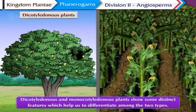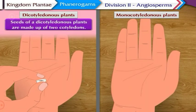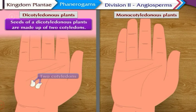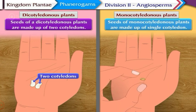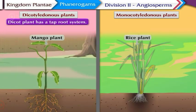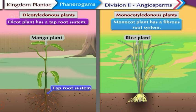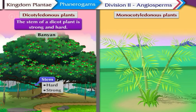Dicotyledonous and monocotyledonous plants show some distinct features which help us to differentiate between the two types. The seeds of monocotyledonous plants are made up of a single cotyledon. A dicot plant has a tap root system while a monocot plant has a fibrous root system. The stem of a dicot plant is strong and hard — for example, the banyan tree.